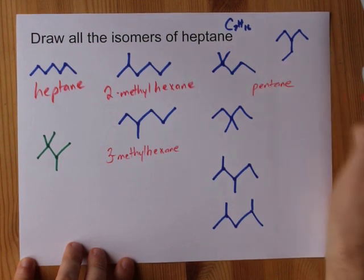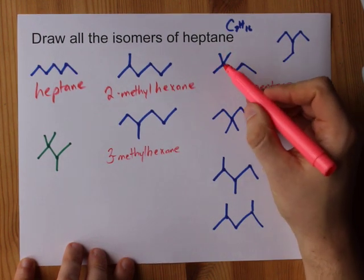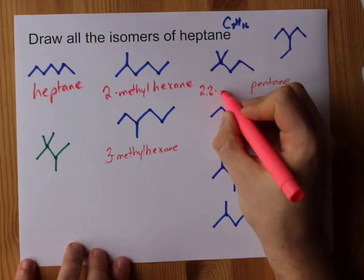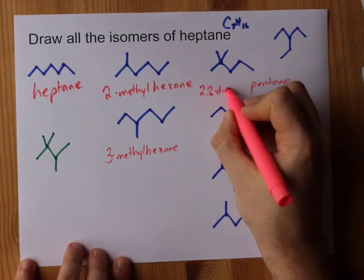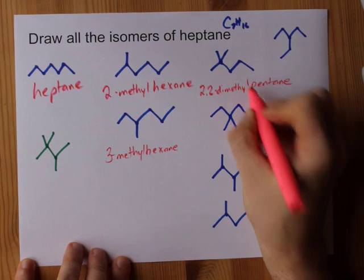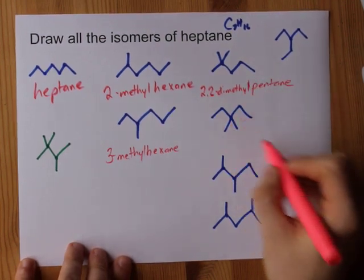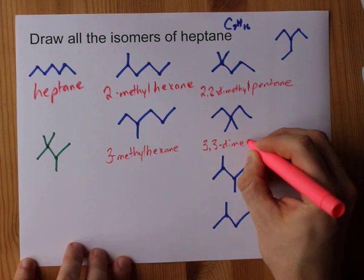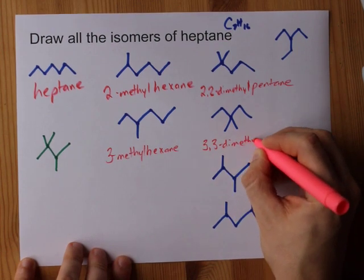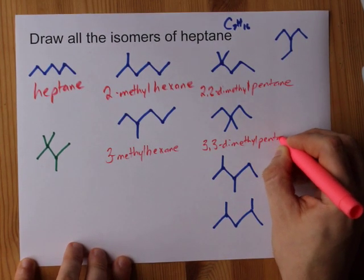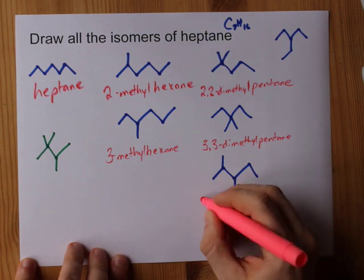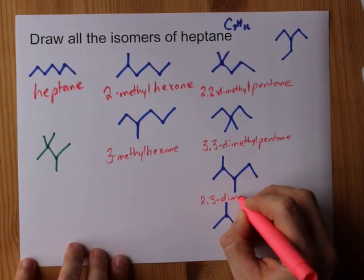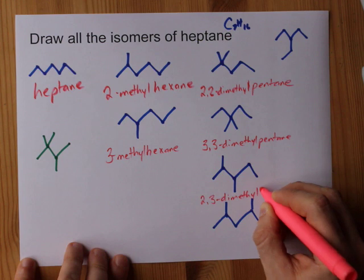Here's my pentane root, but I've got 2 methyl groups both on carbon 2 — that's going to give me 2,2-dimethylpentane. This one's the same but they're both on carbon 3: that's 3,3-dimethylpentane. This one is similar but with the carbons on 2 and 3: that's 2,3-dimethylpentane.